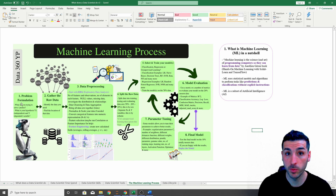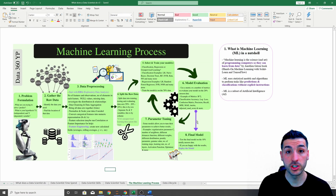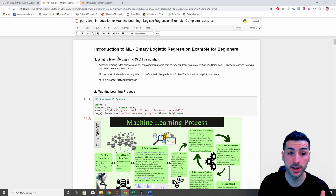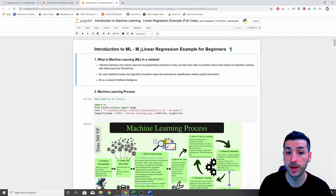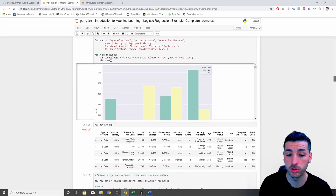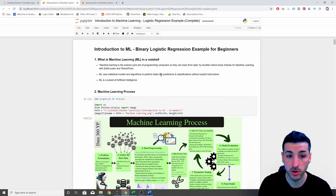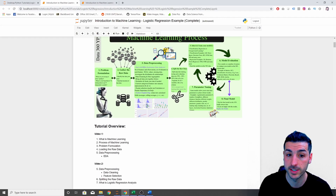Starting with the first step — the problem formulation phase — this is where you clearly need to understand what you're trying to solve and what the problem is. You need to clearly state the problem and what you're trying to predict or achieve. To illustrate this step, I'm going to use two machine learning tutorials I've done: a binary logistic regression and a linear regression tutorial, with links in the description. In those tutorials I go through all the steps and actually apply the code.